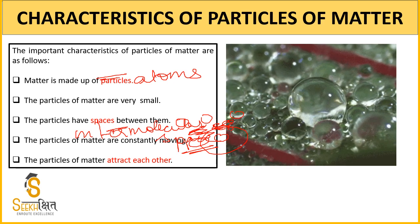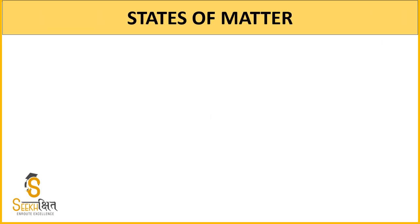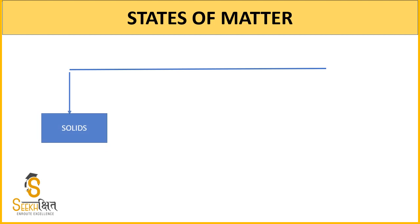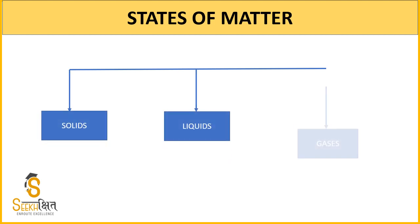Now we will see what the states of matter are. We will study matter in terms of its states. The states of matter are basically three: first, solid; then liquid; then gas. We will discuss solids today, and liquids and gases in our next class.